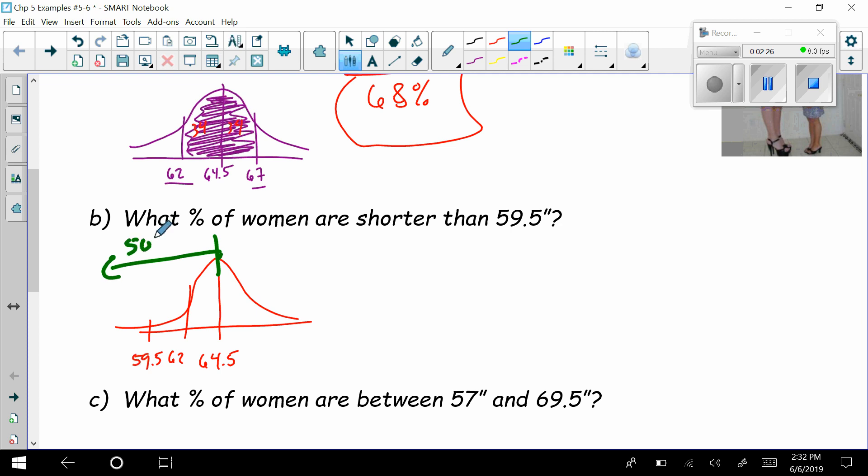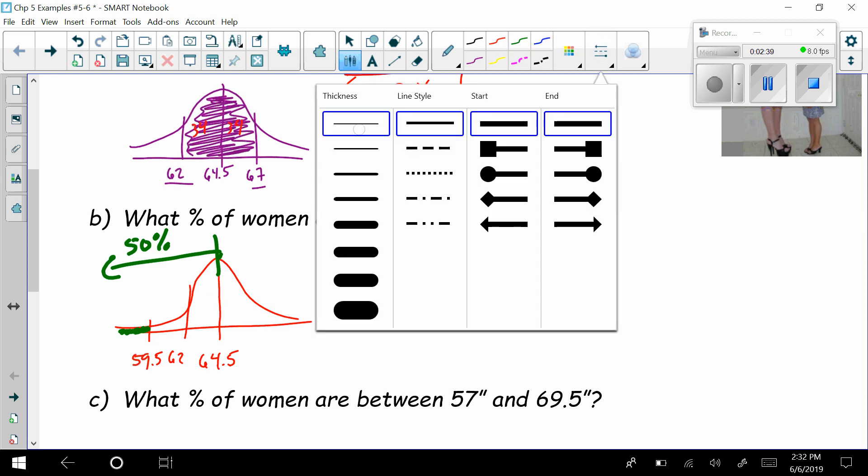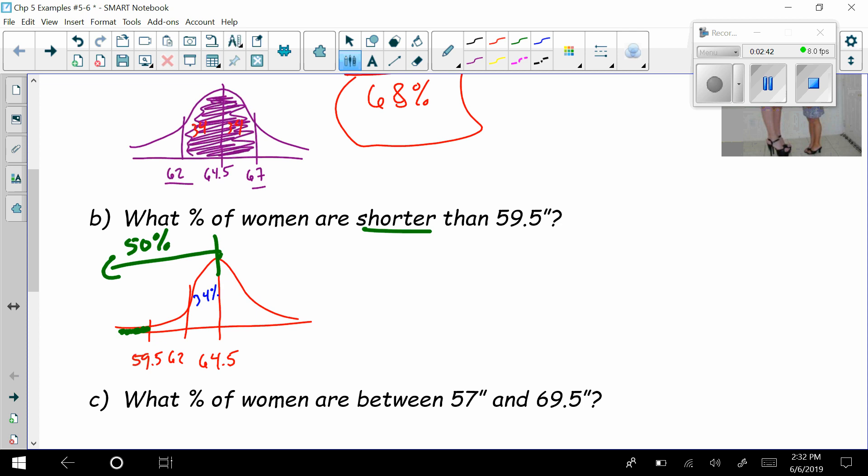Now here we know that the top from the bottom, like from this middle point down this way, this is 50%. Well, we don't get all of that. It says shorter than 59, so I want this little section out here. Well, we know that from the empirical rule, 34% lies here, 13.5 lie here. I don't get that, so it's 50% minus 34% minus 13.5%. And if I'm doing that, I think I end up with 2.5%.